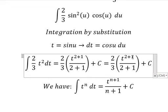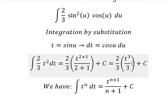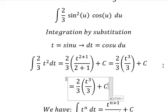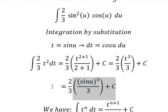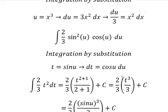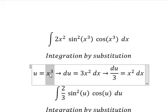So we have 2 over 3 times t cubed over 3 plus c. We substitute t back as sine u, which gives us 2 over 3 times sine cubed u over 3 plus c. Then u is x to the power of 3.